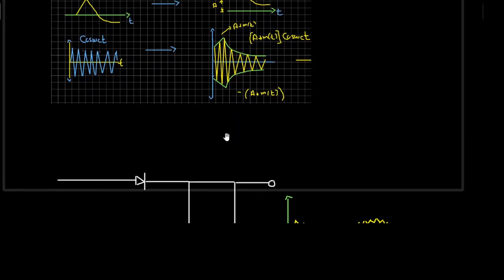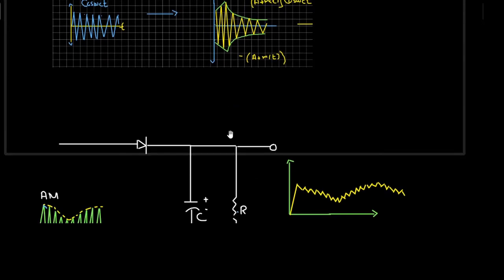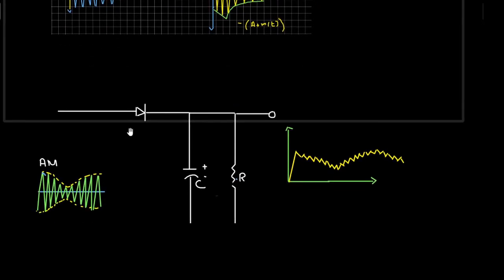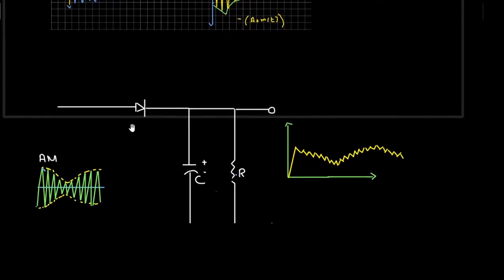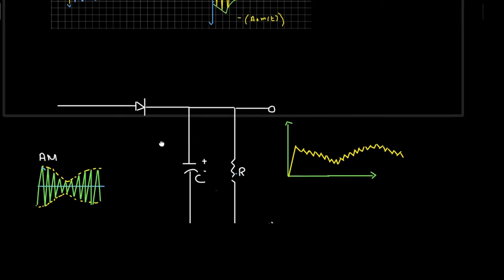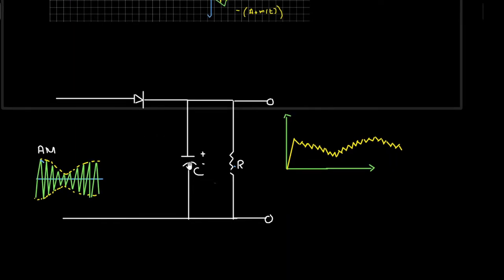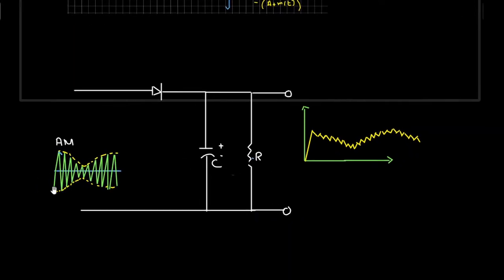So if we are able to recover the envelope of this amplitude modulated signal, we can recover the message signal. The circuit of the envelope detector consists of a diode, a capacitor C, and a resistor R. The diode here is assumed to be an ideal diode which only conducts in the forward direction and acts as an open circuit in the reverse direction.